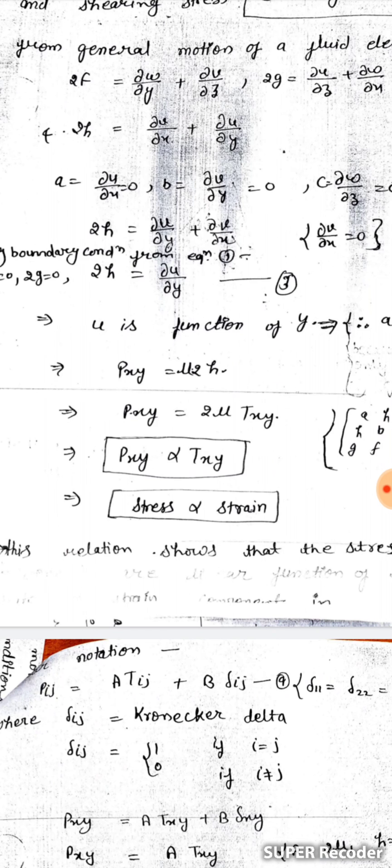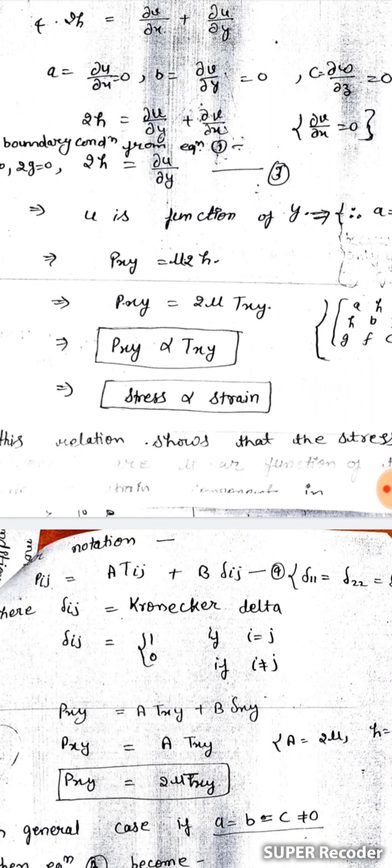This relation shows that the stress components are linear functions of the rate of strain components. In tensor notation this can be written as: Pij = A*Tij + B*delta_ij, where delta_ij is the Kronecker delta. The Kronecker delta equals 1 if i = j, and 0 if i ≠ j.